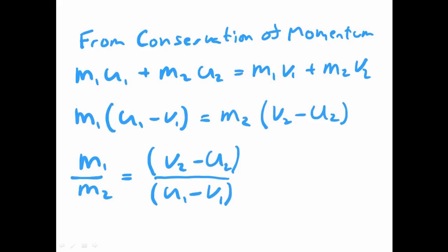And again, like I did with the previous slide, I'm going to divide both sides by M2. And this time, I'm also going to divide both sides by U1 minus V1. And I get this. Now, we know that this is now equivalent to V2 squared minus U2 squared, all divided by U1 squared minus V1 squared.